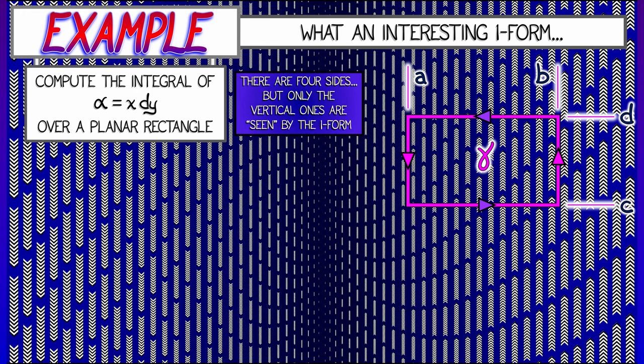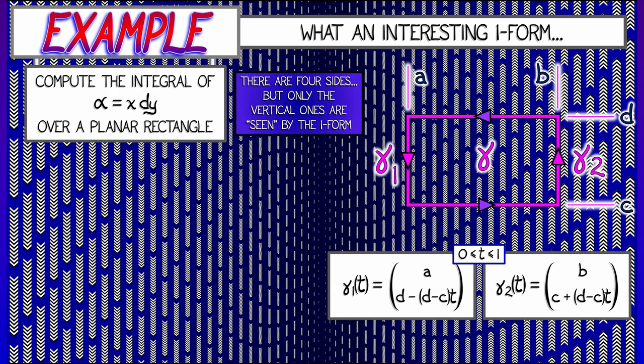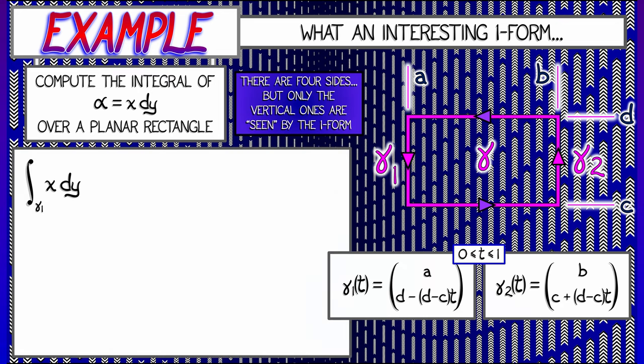Let's say that it goes from a to b in the x-coordinate and c to d in the y-coordinate. And let's say that it's oriented in this counterclockwise direction. Okay, now, what would we compute in this case? Well, there are four different paths in this rectangle. But really, those horizontal ones are invisible to dy because there's no change in y along those horizontal paths. So, it's really only the left and the right hand sides that we have to worry about for this integral. Let's call them gamma 1 on the left and gamma 2 on the right. And let's be really careful. Let's be really formal and actually parameterize these.